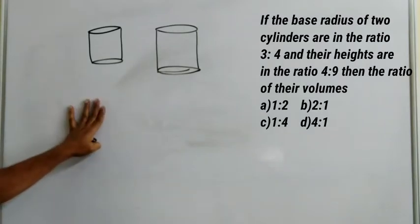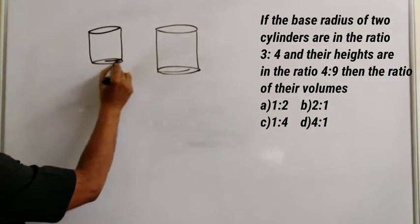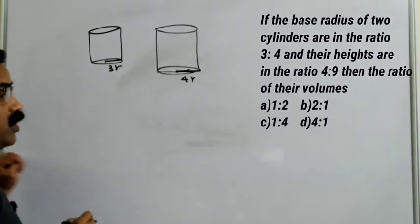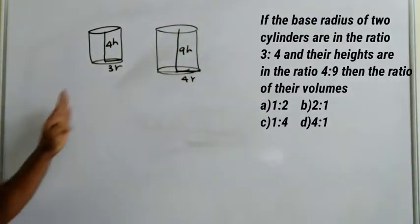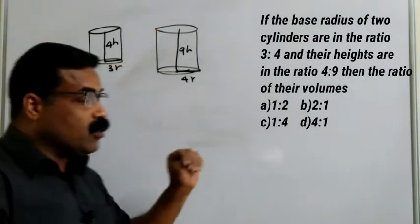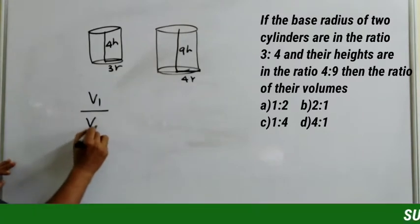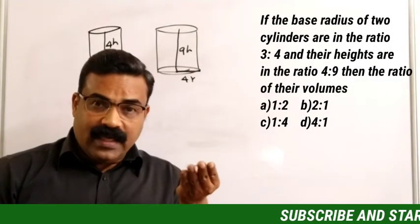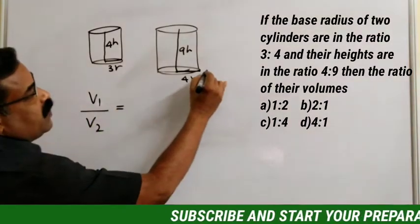The radius of the first cylinder is 3r and the second is 4r. The height of the first is 4h and the second is 9h. We need to find the ratio of their volumes: Volume₁ divided by Volume₂. The volume of a cylinder is given by the formula π r² h.